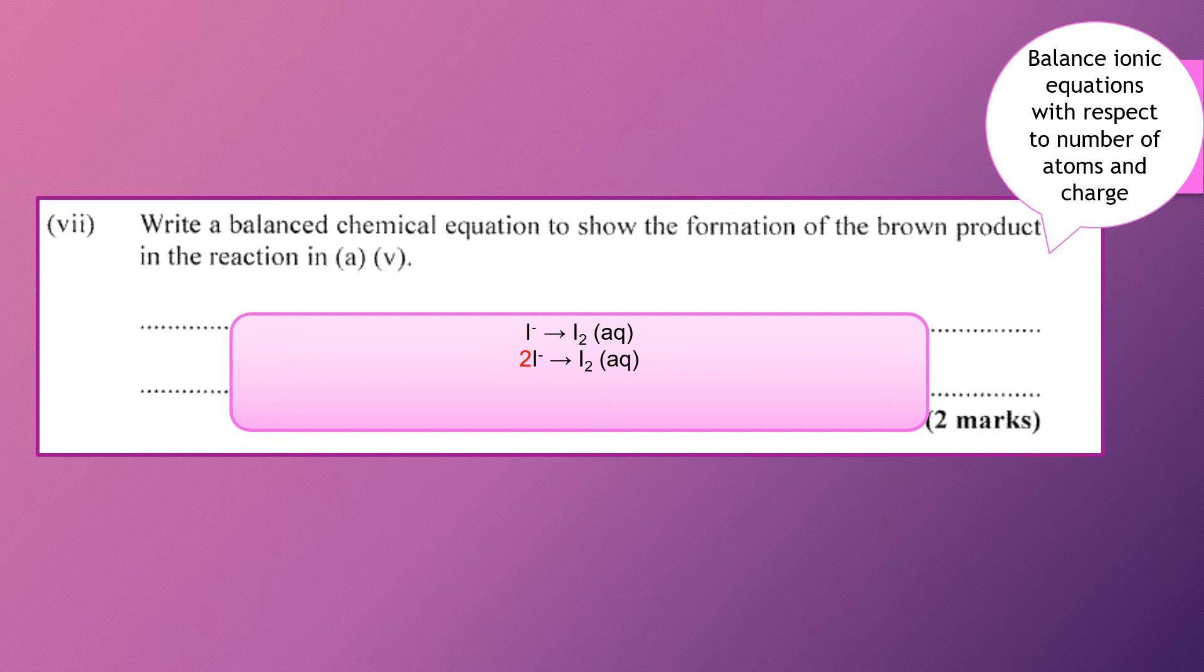So to get the number of charges on the right hand side to be the same, we have to add two electrons. And hence, that would be balanced.